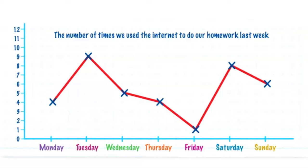The line shows a rise in the number of children using the internet between Monday and Tuesday, and between Friday and Saturday. The line shows a fall in the number of children using the internet between Tuesday and Friday, and between Saturday and Sunday.